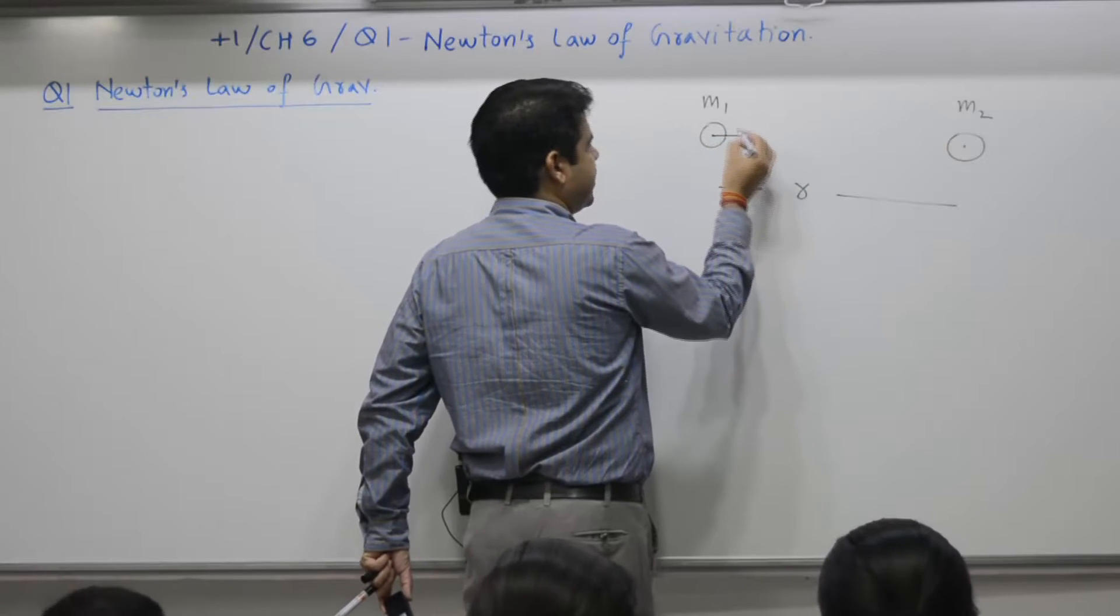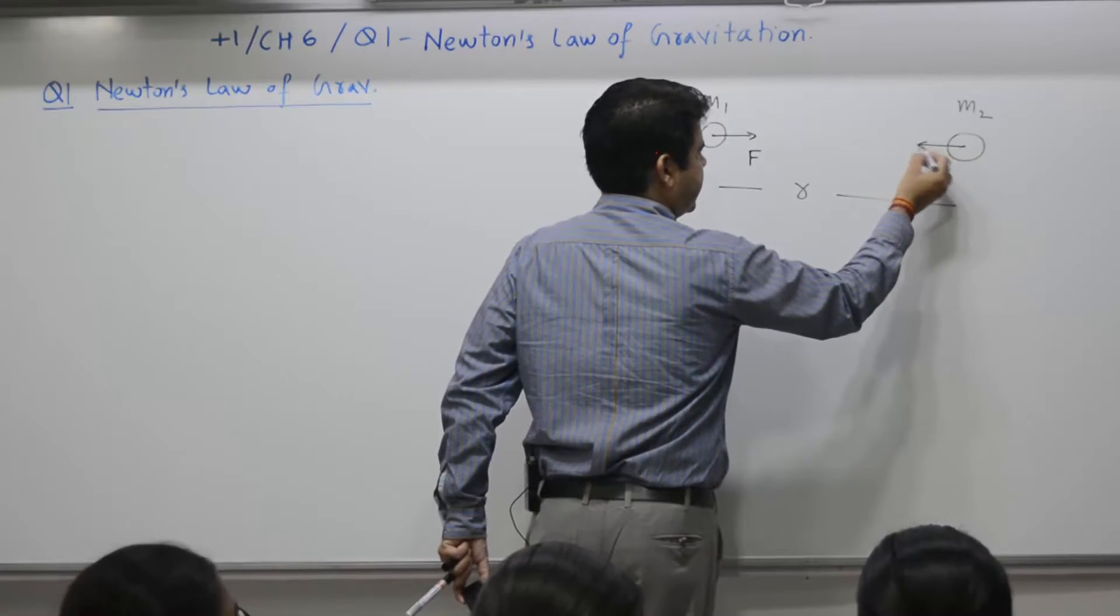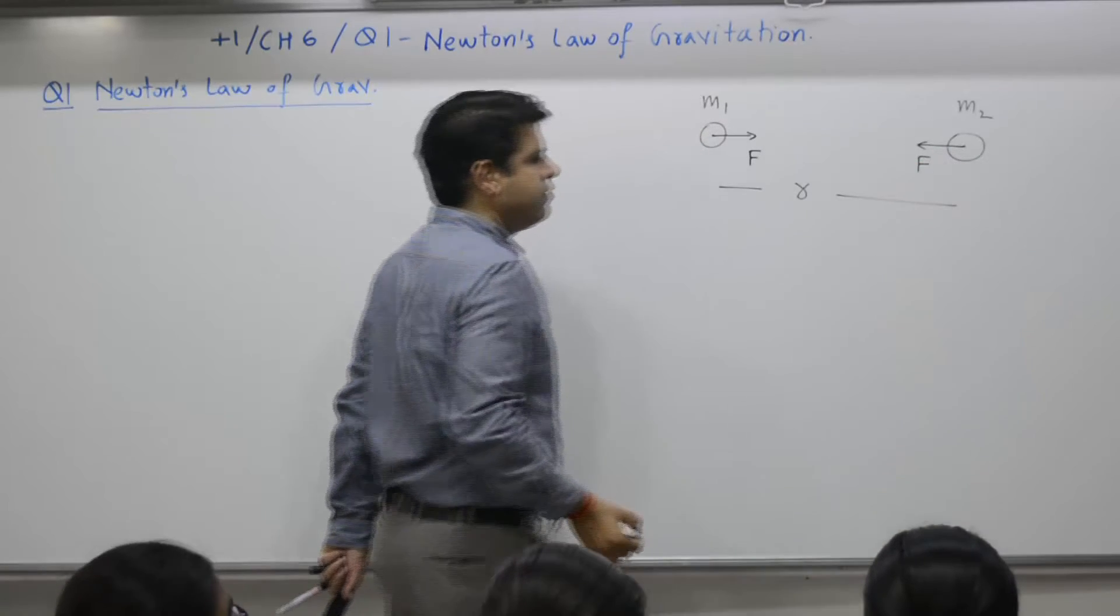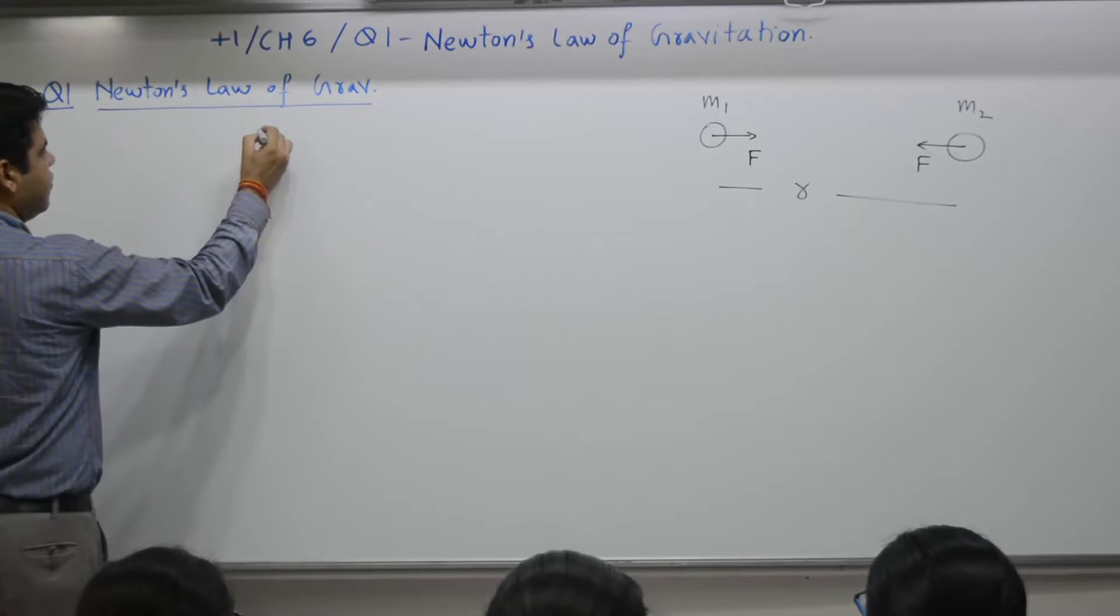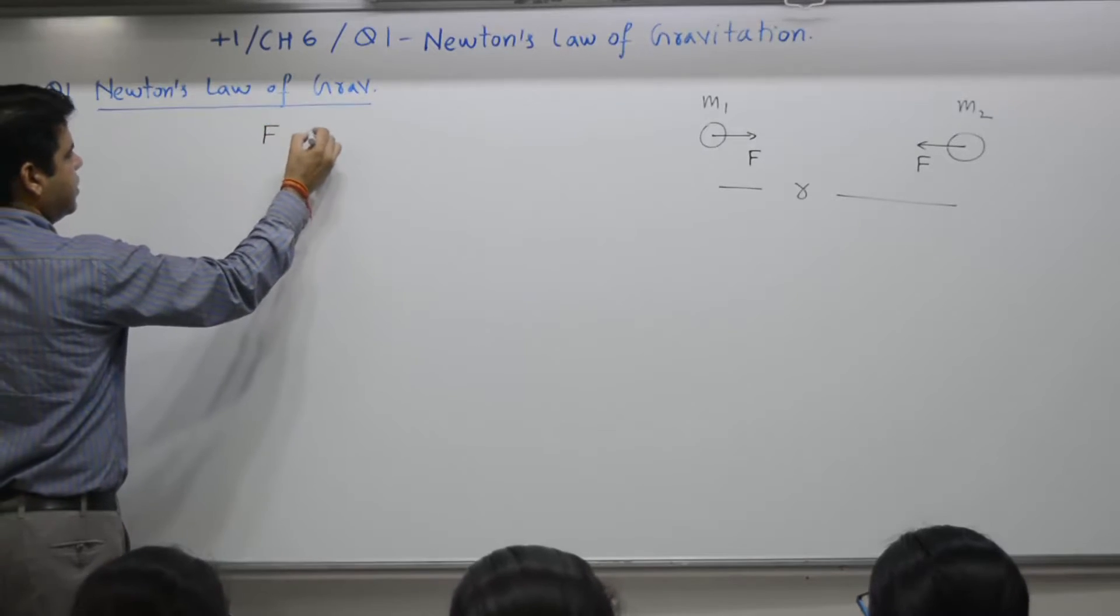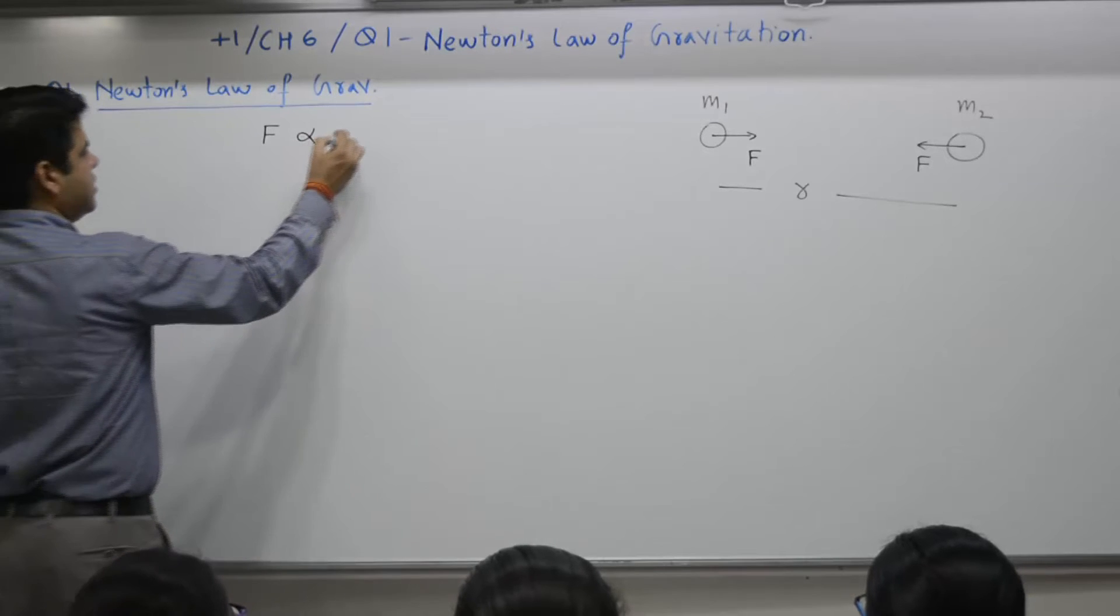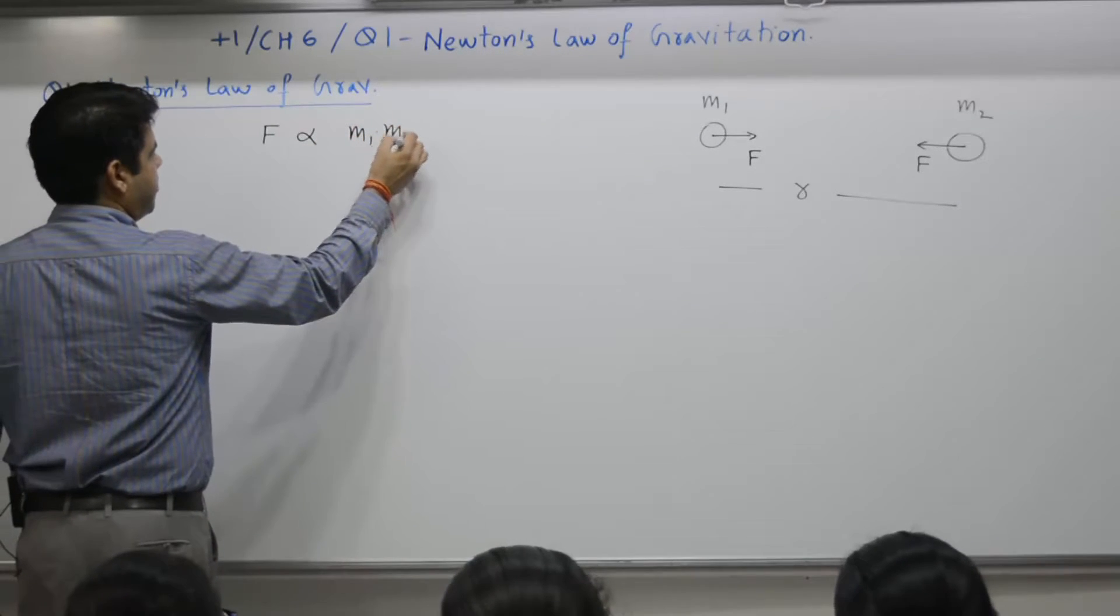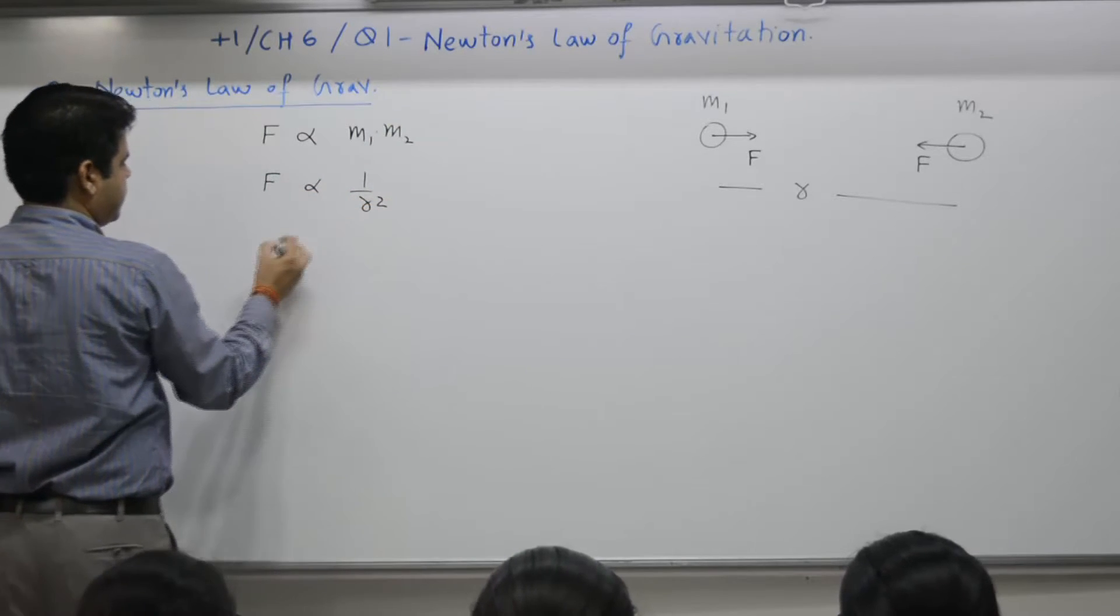Then Newton's law is force between the two. There is a force acting on one due to two, force acting on two due to one. We'll take up the direction part in B part. Force between the two is proportional to product of masses m1, m2. It also depends on distance between the two, r square.